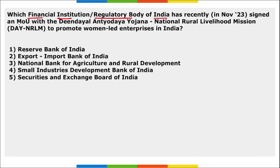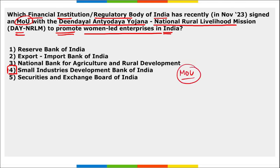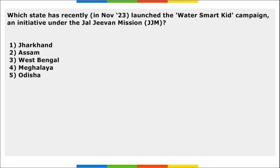Which financial institution signed an MOU with Deendayal Antyodaya Yojana National Rural Livelihoods Mission to promote women-led enterprises in India? It is SIDBI — Small Industries Development Bank of India. They signed an MOU with DAY-NRLM to promote women-led enterprises, valid for the next two years. Meghalaya launched the Water Smart Kid Campaign under Jal Jeevan Mission, focusing on educating children about water conservation and protection.